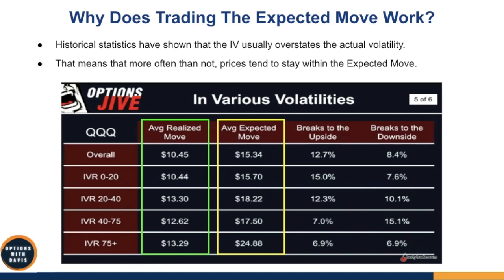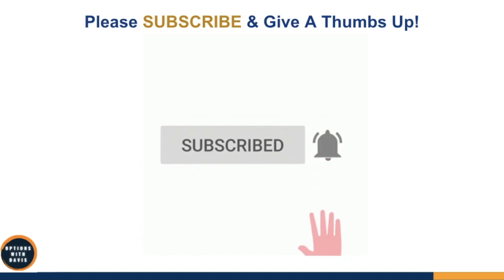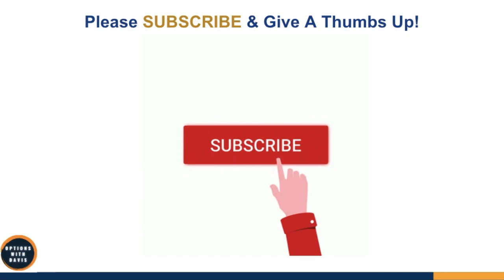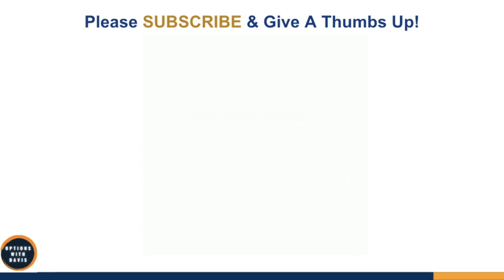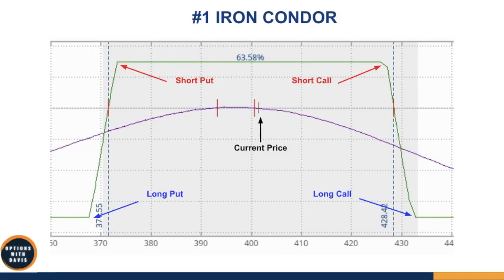I'm going to share the top three most profitable market-neutral option trading strategies, starting with number one — the iron condor. I've created a separate in-depth video on this covering how to construct it and manage it once you're in the trade. For this video, I'll give you a brief overview. The iron condor consists of two short options — a short put and a short call — along with a long put and a long call. One way to look at it is as two credit spreads: you have the put credit spread and the call credit spread, and both sides give you an overall credit.